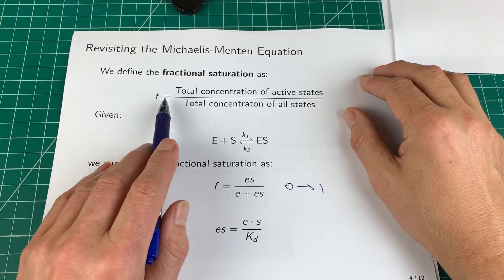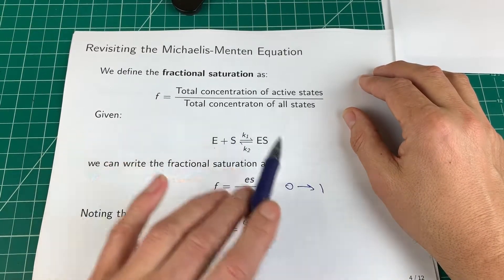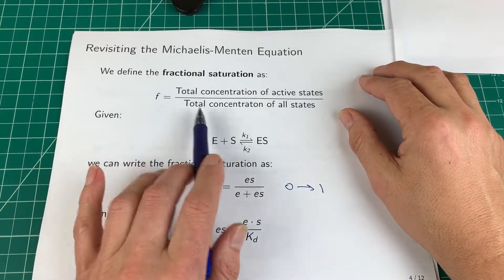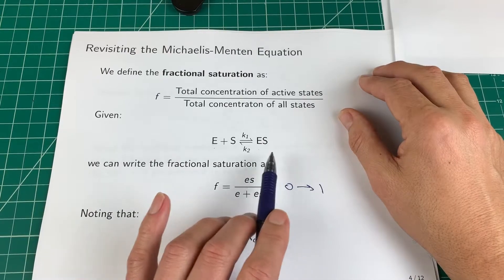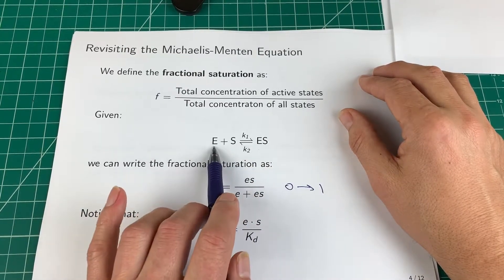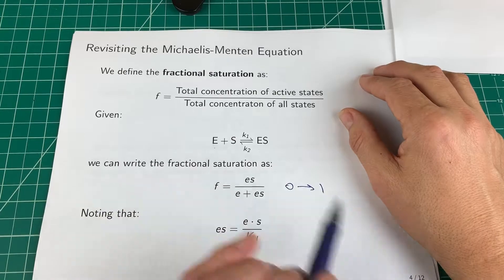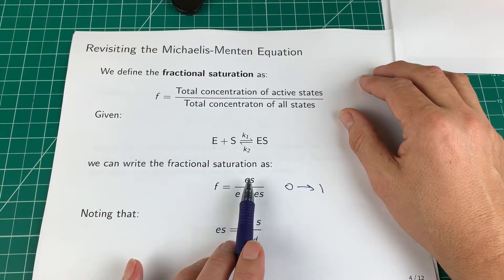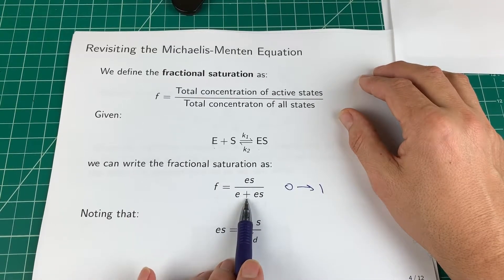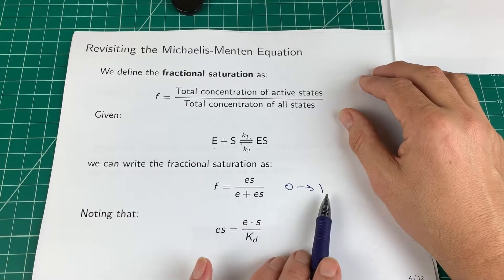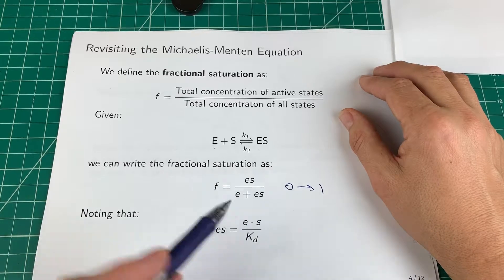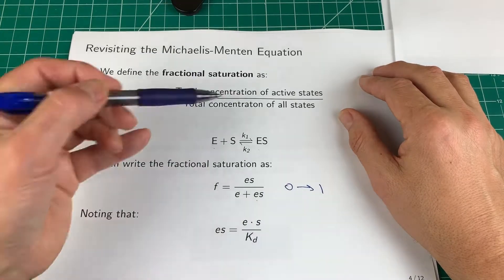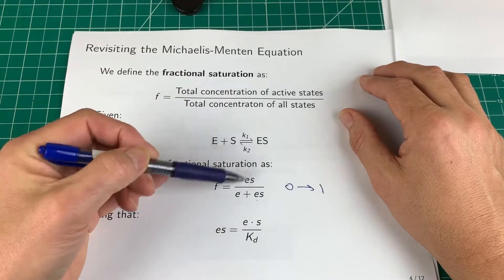The fractional saturation is the total concentration of active states — the only active state is ES because that's the one that leads to product — divided by the total concentration of all states. The total concentration of all states is the sum of free enzyme and enzyme-substrate complex. So I can write the fractional saturation as the concentration of enzyme-substrate complex divided by the total. This number ranges from 0 to 1: when it's 0 all the enzyme is present as free enzyme, and when it's 1 all the enzyme is present as enzyme-substrate complex.